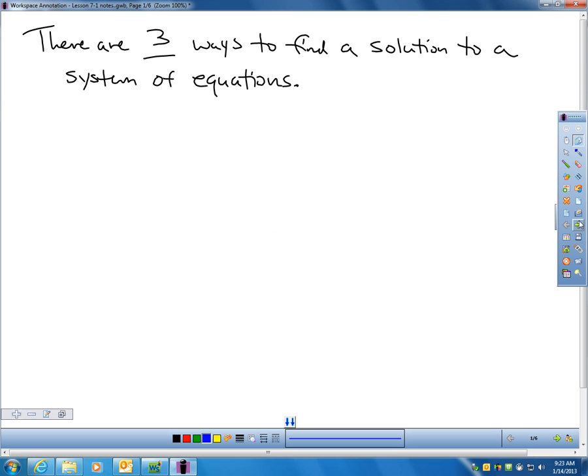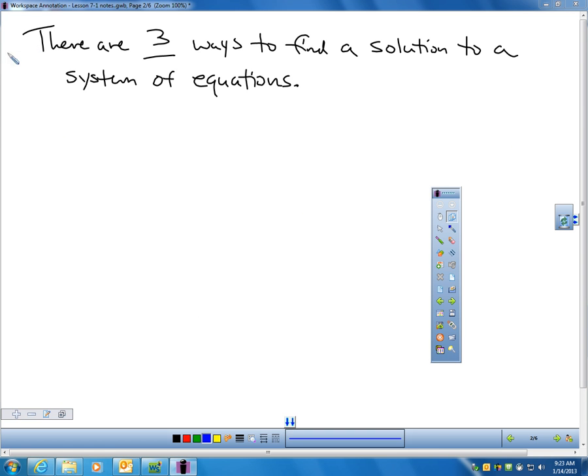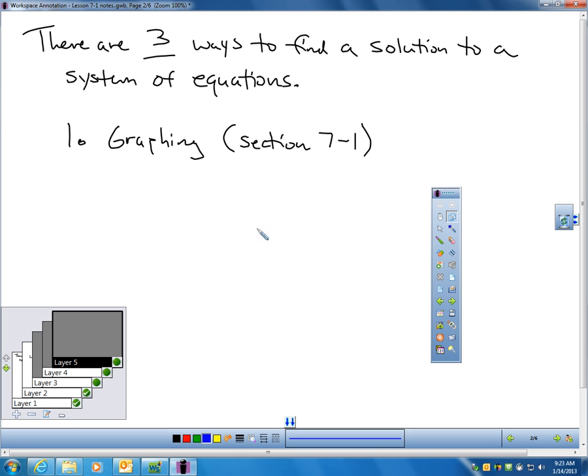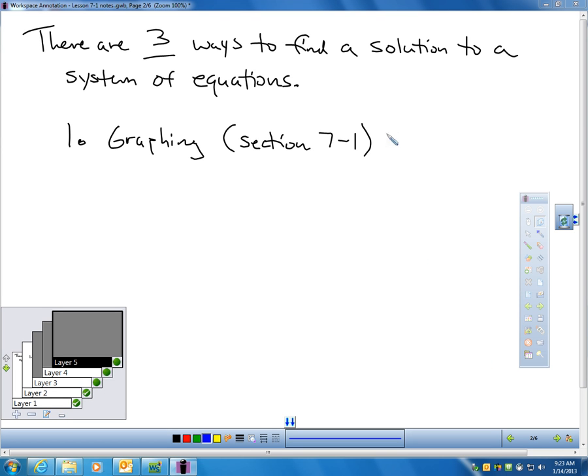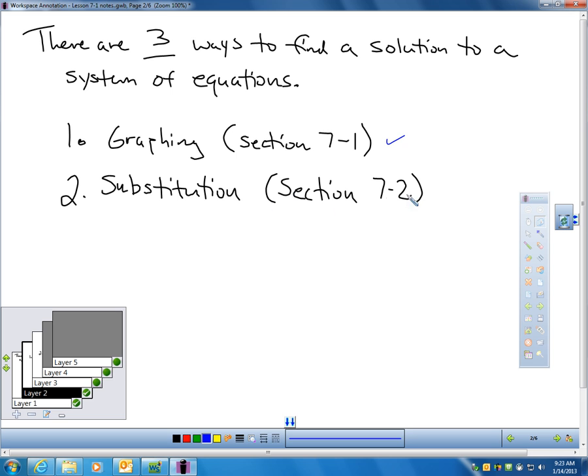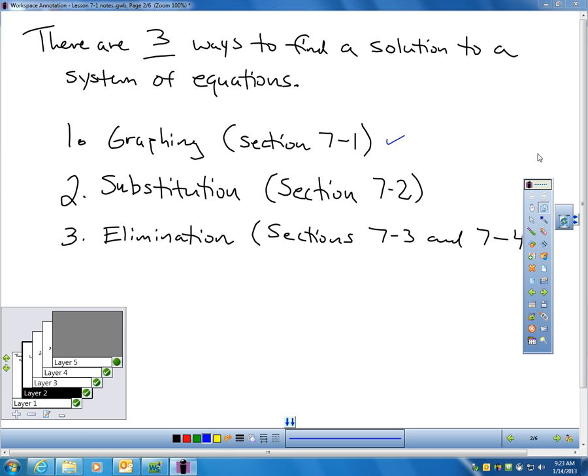Now, this next thing would be great for my video audit. There are three ways to find a solution to a system of equations, and here they are. Graphing, that's what we're going to learn today in Section 7.1. We can solve a system of equations by graphing. We can also learn by substitution. That's what you're going to learn in the next section. And then in the next two sections after that, we're going to use a process called elimination. So there's three ways to find a solution to a system: Graphing, substitution, elimination. We're going to concentrate on graphing today.